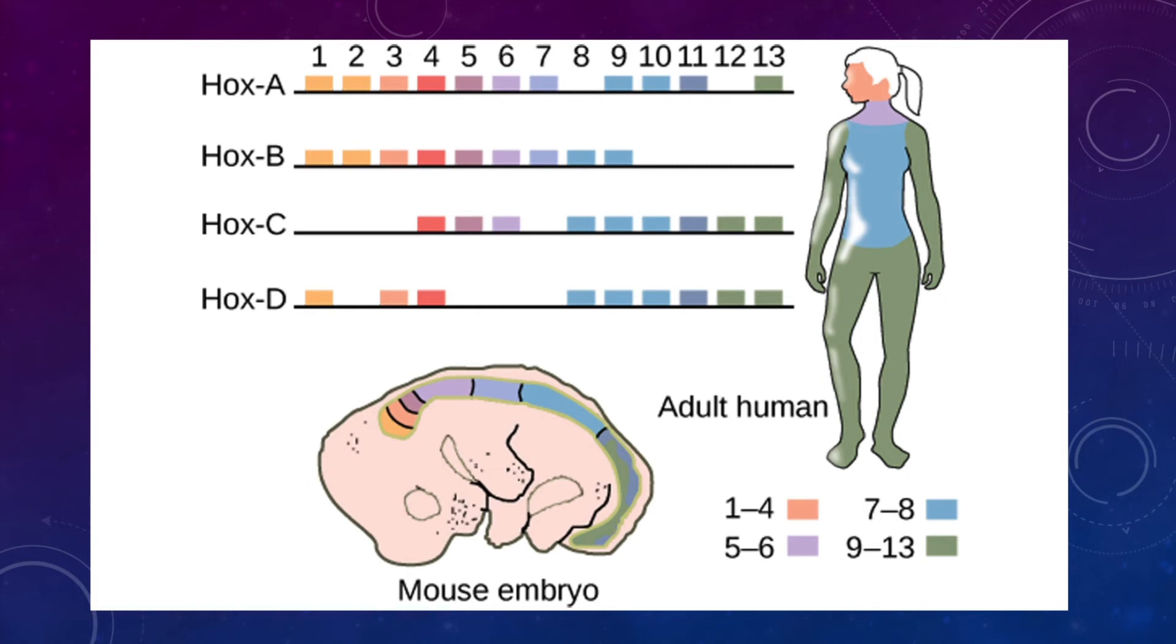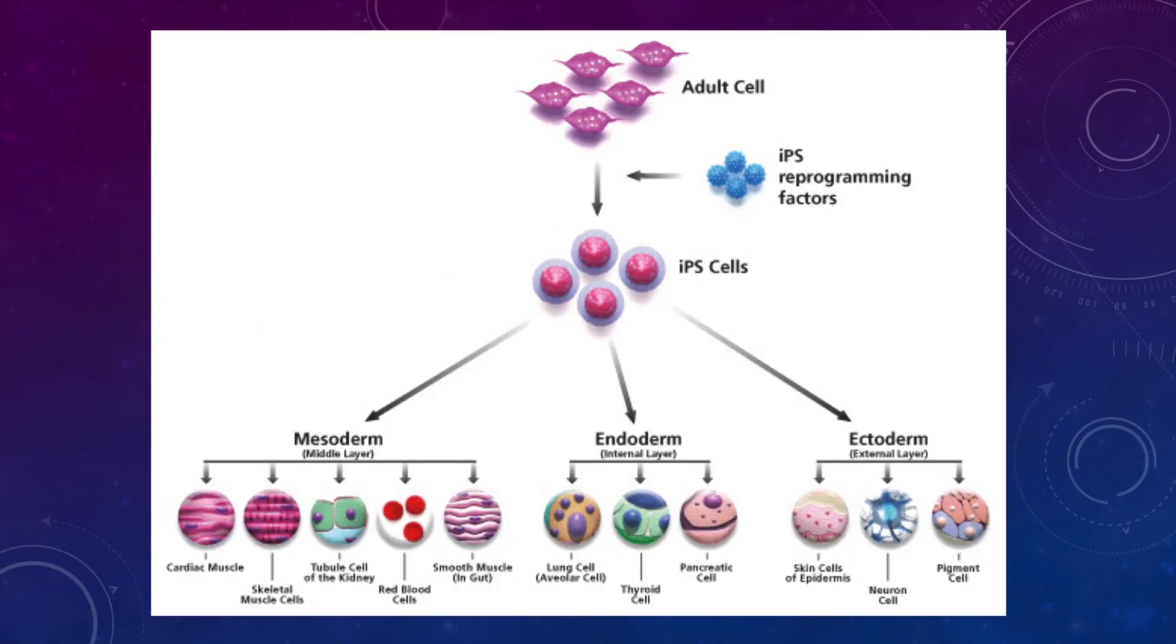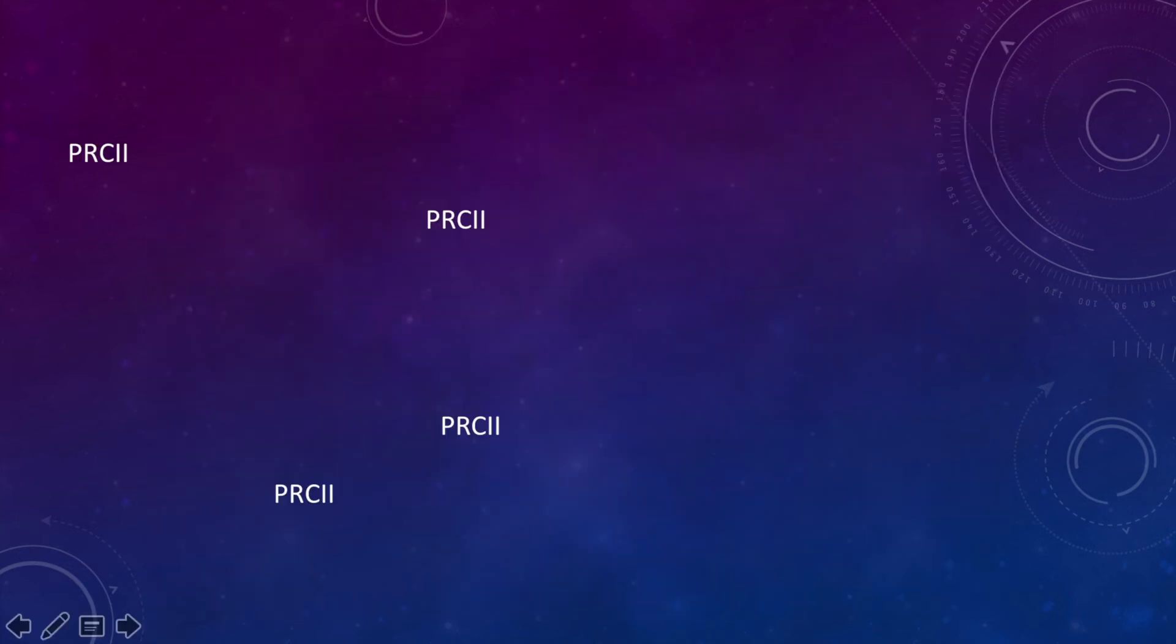It was observed in one study that during differentiation, none of the genes typically repressed by methylation were methylated. When differentiation was not occurring, methylation was observed in the genes of interest. The ability to repress differentiation through methylation ensures select ES cells keep their pluripotency. That is, the cells can still be committed to different types of tissue.